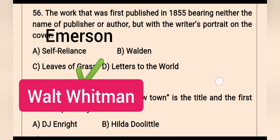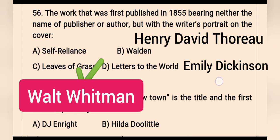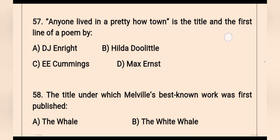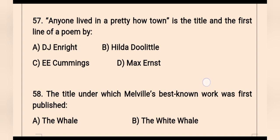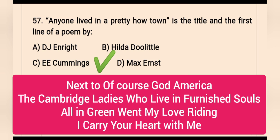The other options: Self-Reliance is an essay by Ralph Waldo Emerson; Walden, or Life in the Woods is a series of 18 essays by Henry David Thoreau; and Letters to the World is written by Emily Dickinson. Question 57: 'anyone lived in a pretty how town' is the title and first line of a poem by e.e. cummings — option C is the right answer. e.e. cummings was an American poet whose other famous works include 'next to of course god america' and 'i carry your heart with me.'